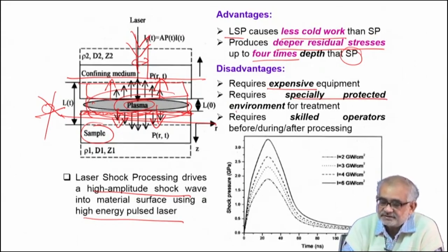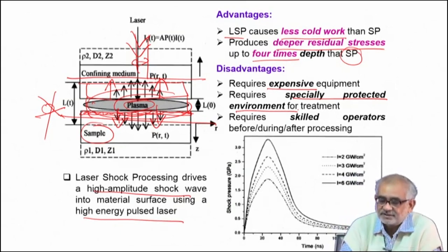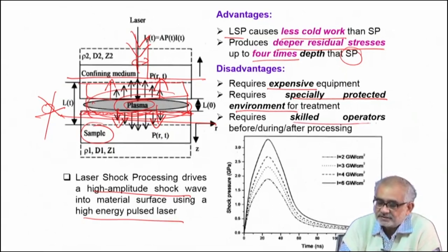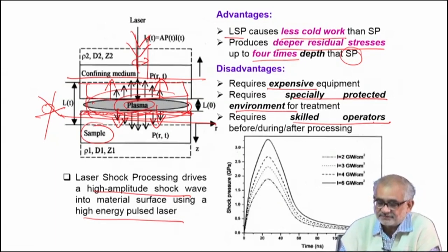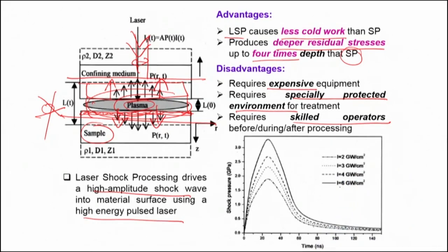A protected environment is required because laser can penetrate almost any solid — certainly the human eye — so one must take enough precaution in terms of the chamber, goggles, and so on. Operators who are trained and skilled enough to use this sophisticated technique are also required. Depending on the laser fluence or power density, the results vary significantly.